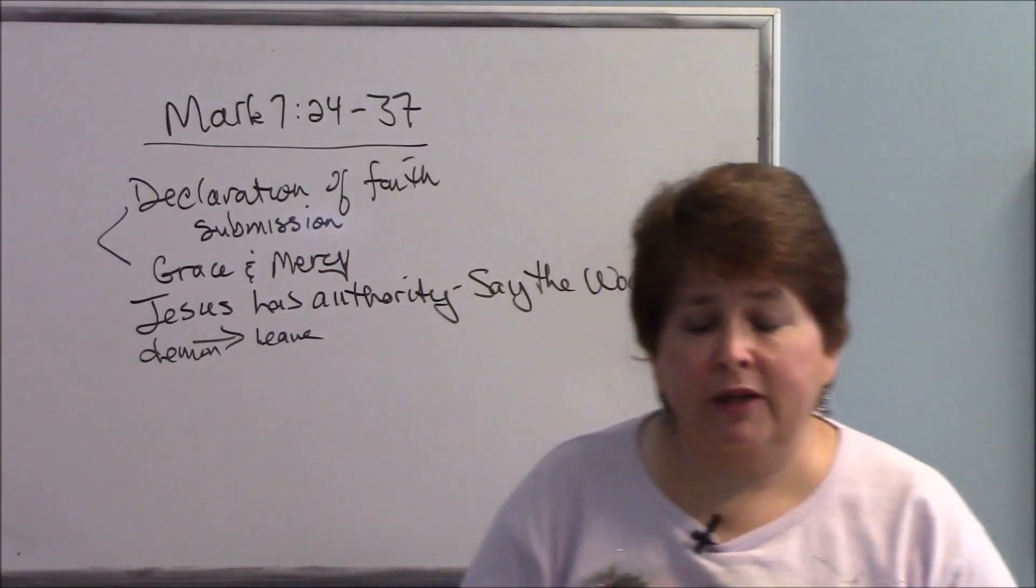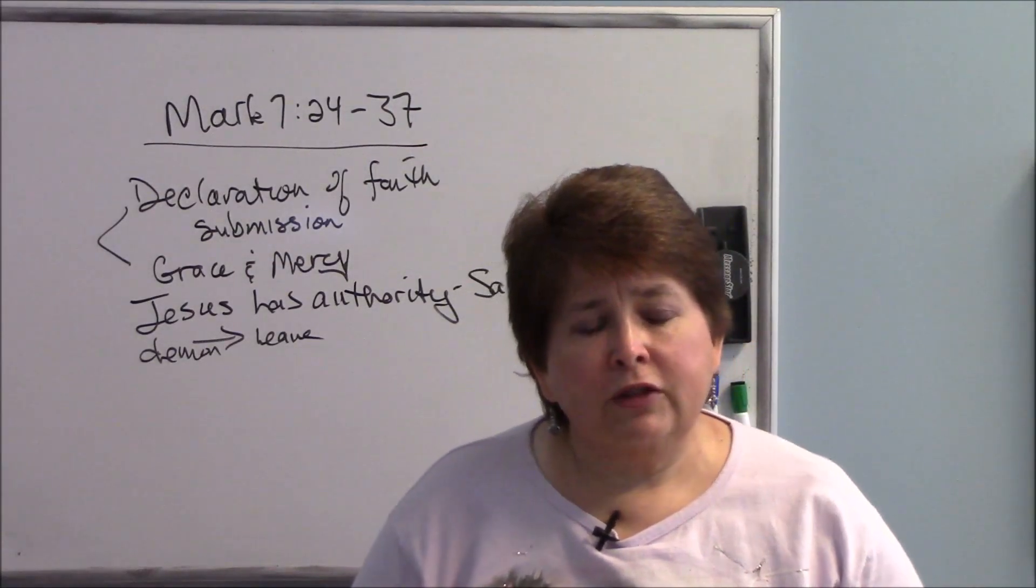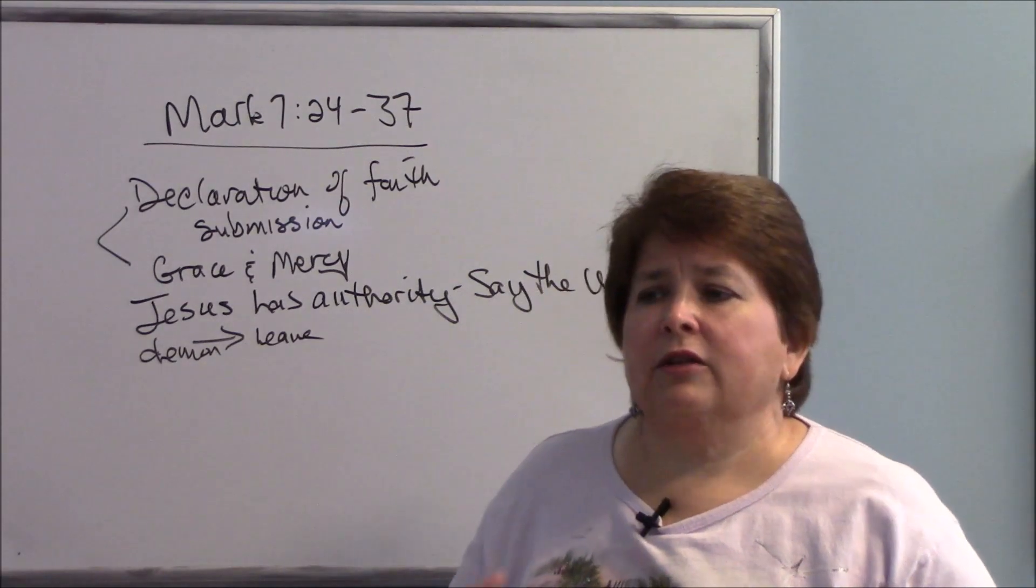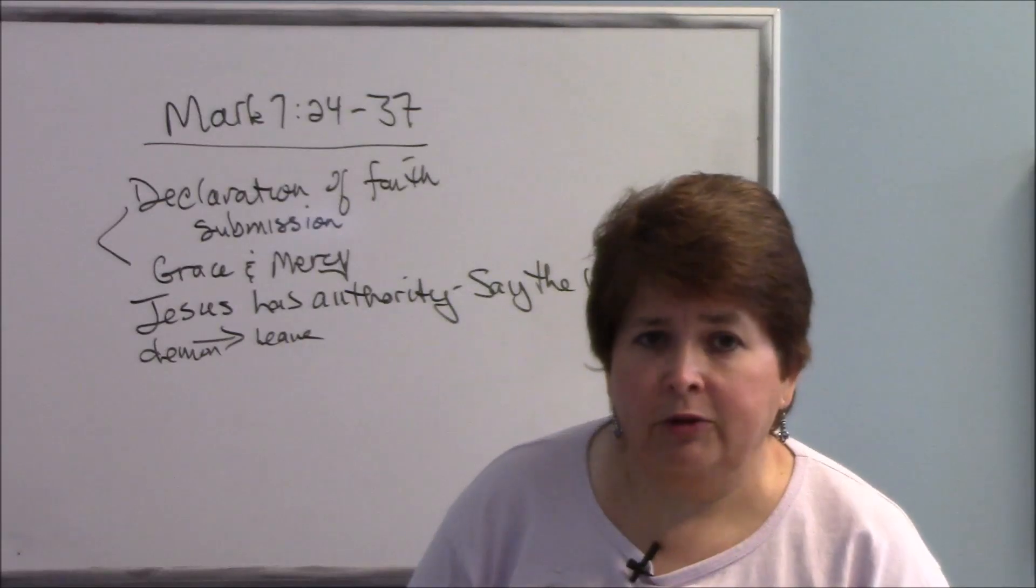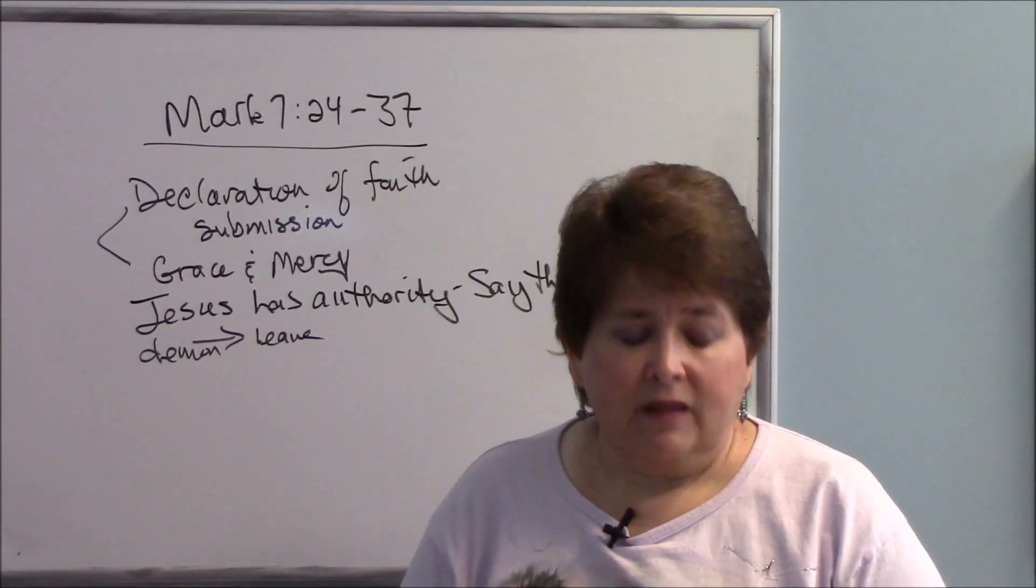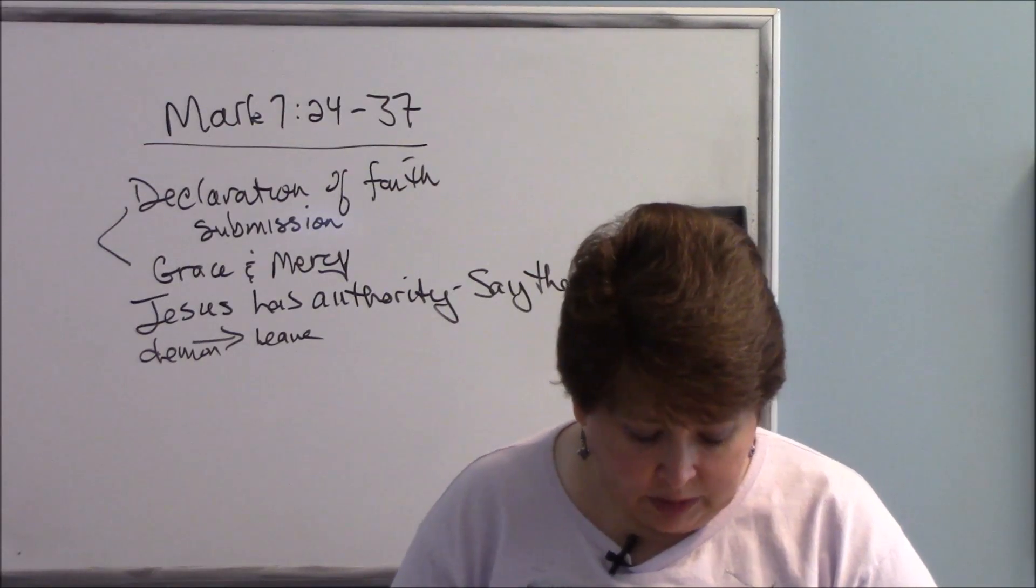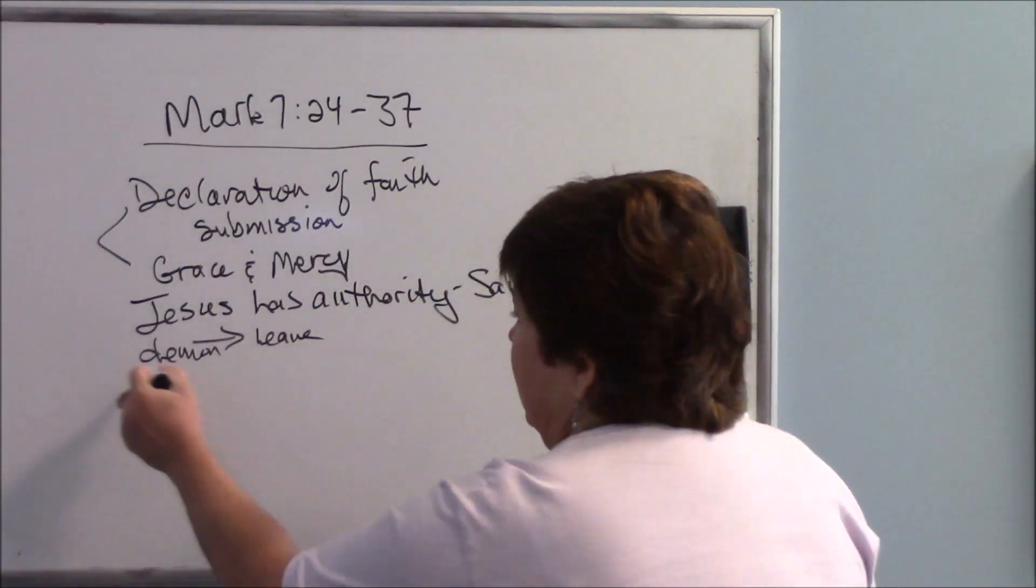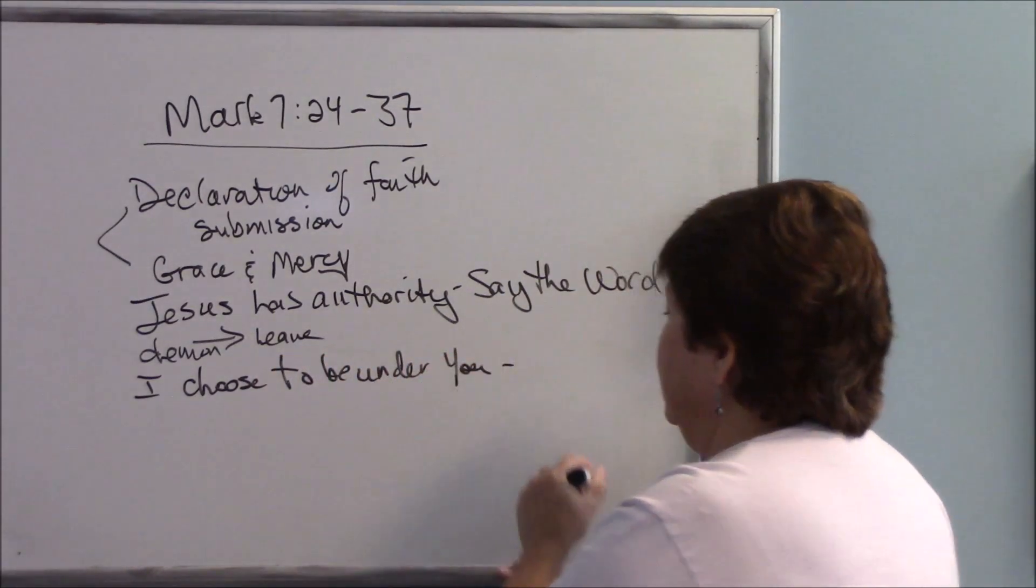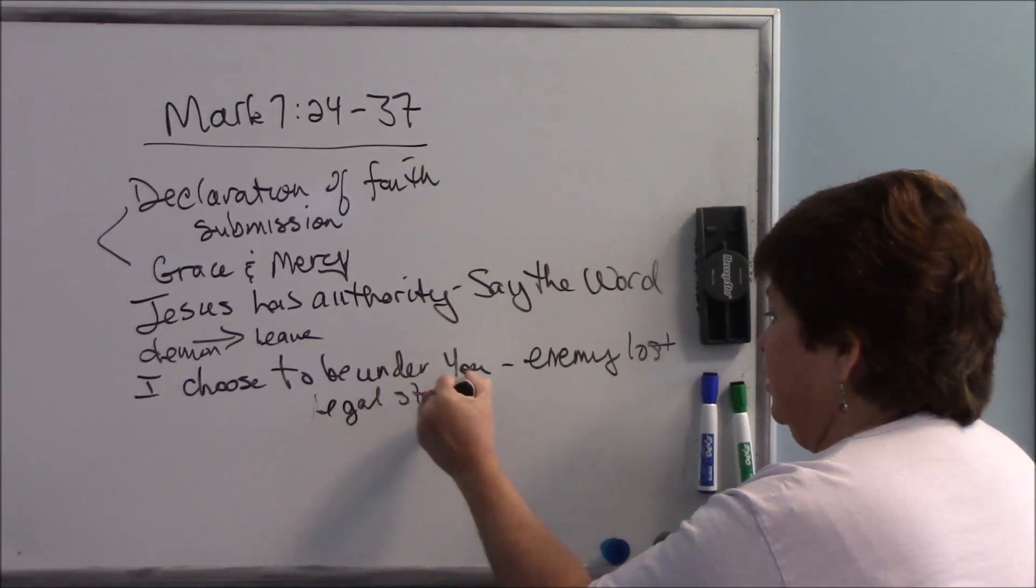I need you to throw me some crumbs, just like you would a pet, someone in your family. They eat the scraps. They sit there looking at you, just waiting for you to hand them something. But they're loved. And so he looks at her and says to her, because of this answer, because of your word, go your way. The demon has gone out of your daughter. Her statement was, I choose to be under you. And as a result, the enemy lost his legal standing and had to leave.